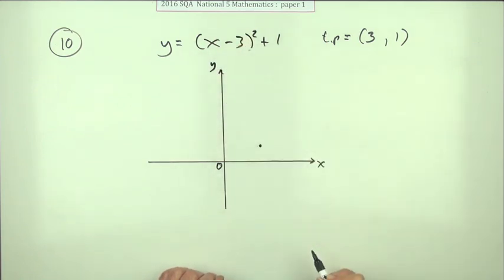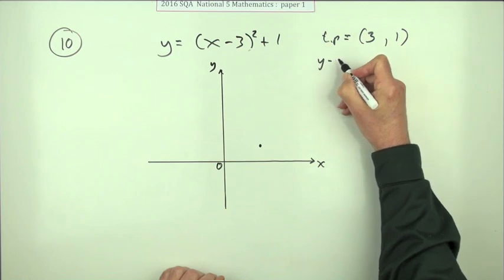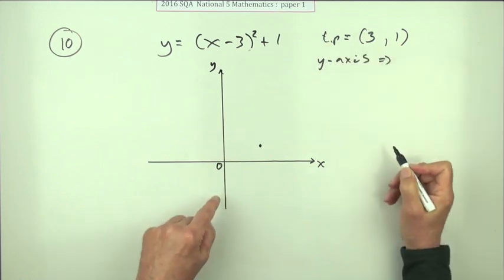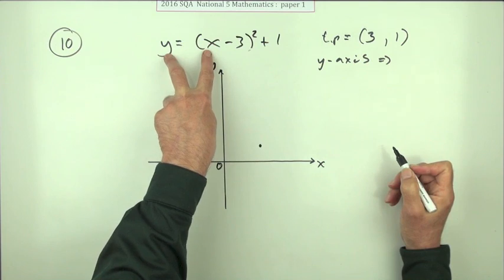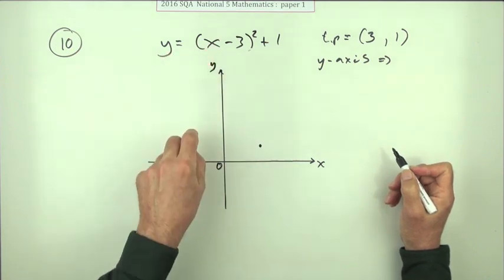But where does it cut the y-axis? Well, it cuts the y-axis when x is 0. You've got two letters, you can't work both of them out - you can only work out one of them if you know the other.